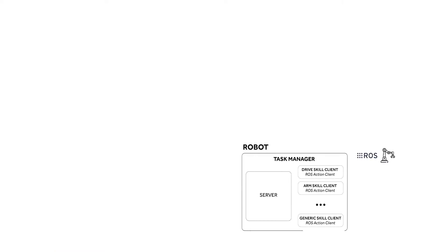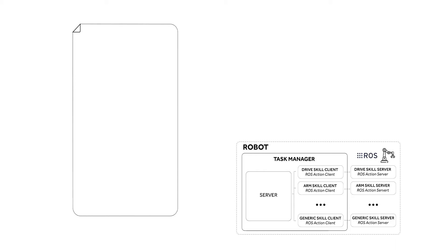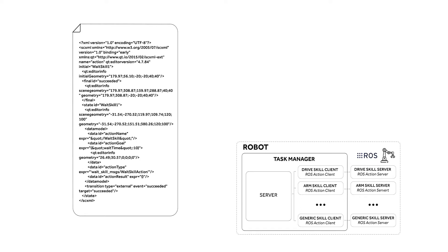Inside each of Ineshtech's robots, there's an instance of the Task Manager running. Task Manager is a ROS package responsible for orchestrating the execution of robotic tasks. Each robotic task consists of a sequence of robotic skills. Robotic skills are modular and reusable blocks of software built upon ROS actions, able to perform well-defined operations like drive operations. Robotic tasks are represented as SCXML files and are parsed by the Task Manager, which converts them into instances of ROS SMACH.